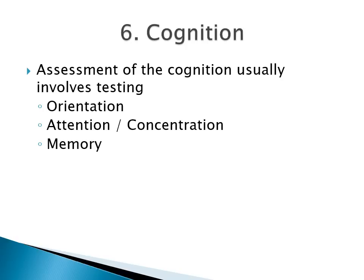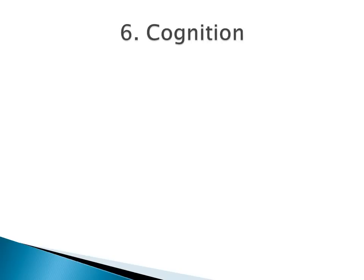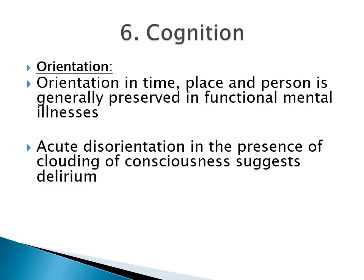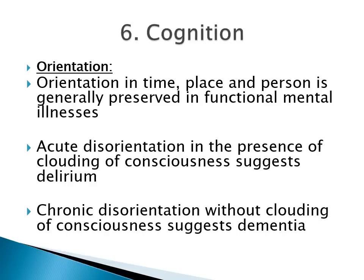We now move on to cognition. Assessment of cognition usually involves testing orientation, attention, concentration, and memory. More detailed cognitive assessments would be warranted for some patients such as those with dementia. Orientation in time, place, and person is generally preserved in functional mental illnesses like depression, schizophrenia, and mania. Acute disorientation in the presence of clouding of consciousness is seen in delirium — an acute confusional state. Chronic disorientation without clouding of consciousness is seen in dementia.